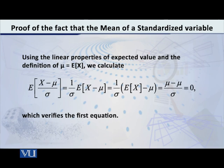The numerator is the expected value of x minus mu. What is the expected value of x itself? Of course, it is equal to mu. So therefore the numerator is mu minus mu, which is 0 over sigma, which equals 0. This is a very simple proof of the fact that the expected value of the standardized variable is always equal to 0.